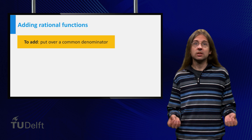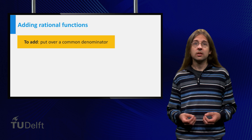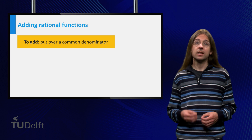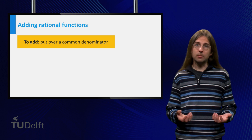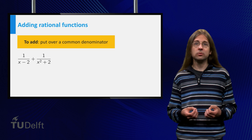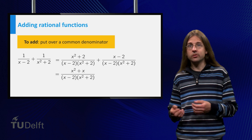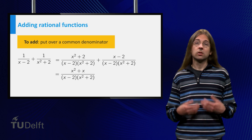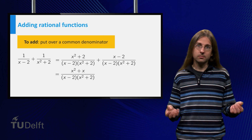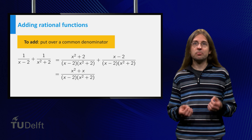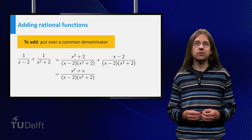You can calculate with rational functions just as you are used to with ordinary fractions. In particular, if you want to write a sum of two rational functions as a single fraction, you have to put both terms over a common denominator. For example, if we add 1 over (x minus 2) plus 1 over (x squared plus 2), we use (x minus 2) times (x squared plus 2) as a common denominator. The result is (x squared plus x) over (x minus 2)(x squared plus 2). Typically, factored expressions are easier to work with, so refrain from expanding the denominator unless you have a good reason to expand.